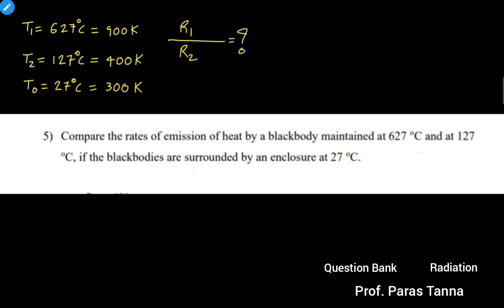Students, the general formula to find out the rate of emission of heat when the temperature of the surrounding is provided in the data goes like this: Q/t = EAσ(T⁴ − T0⁴).